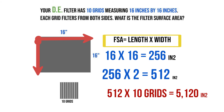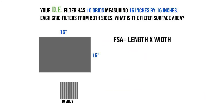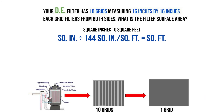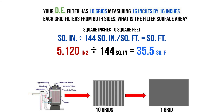That's how many square inches the entire filter is, but we want this in square feet. Square inches divided by 144 gives us square feet — that's our conversion factor. So we divide 5,120 by 144, and that gives us 35.5 square feet. That's the answer to this problem.